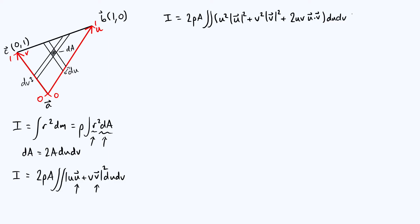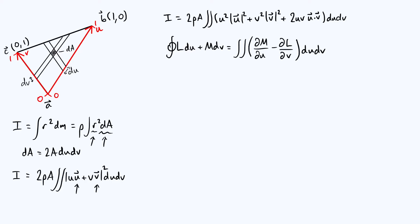At this point I'm going to do the same thing I did in the last video: use Green's theorem to convert our area integral into a line integral. Green's theorem is a way of relating a line integral going anti-clockwise about a closed curve to an area integral over the area enclosed by the curve. We're going to use it in reverse — going from an area integral to a line integral — and we'll break things up into more manageable chunks by considering the three different contributions to the moment of inertia separately.